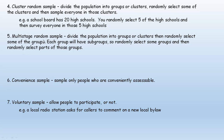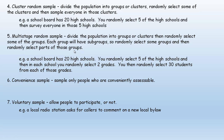One key difference between cluster and multi-stage sampling: in a cluster sample, once you've picked your groups, you select everyone in them. In a multi-stage random sample, you divide the population into groups, randomly select some groups, but then each group has subgroups — you randomly select some of those, then randomly select only part of those final groups. For example, using the same school board with 20 high schools: you randomly select five schools, then in each school you randomly select two grades, and then randomly select 30 students from each of those grades. You're only selecting part — that's what makes it multi-stage.